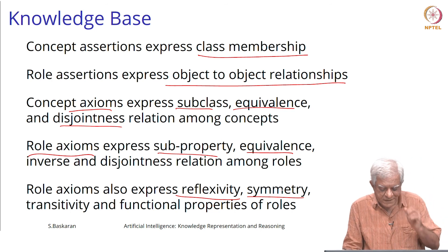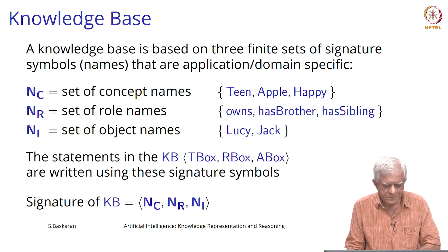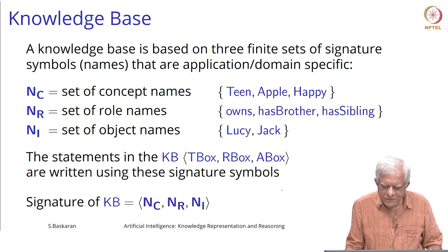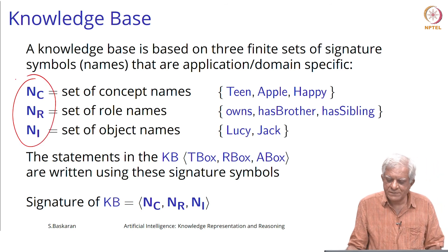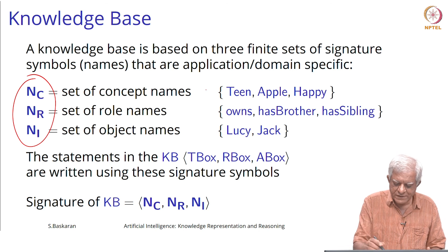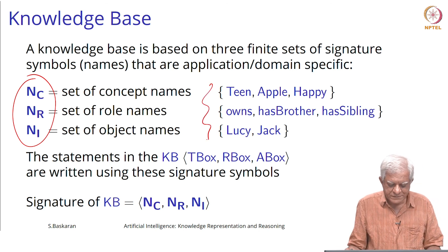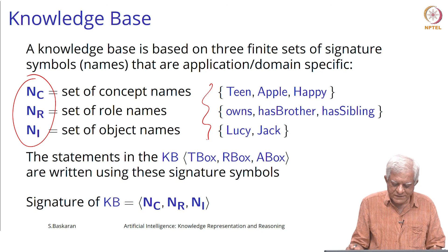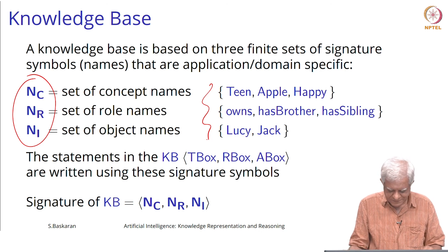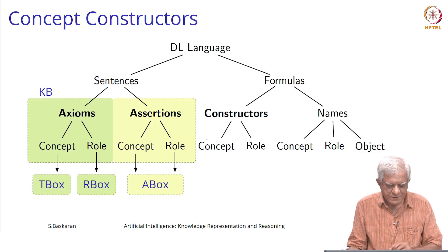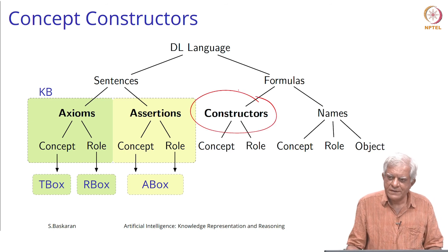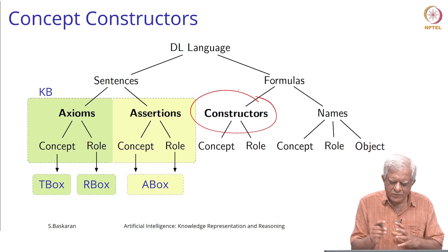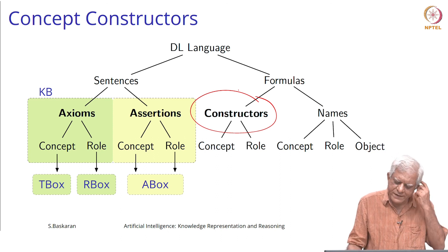We have three finite sets of signature symbols: NC (set of concept names), RC (set of role names), and NI (set of object names). We have seen examples of these already. The statements in the knowledge base are written using these symbols. Now let us talk about constructors — since we want to look at quite a few of them, let us take a break and come back and look at this.